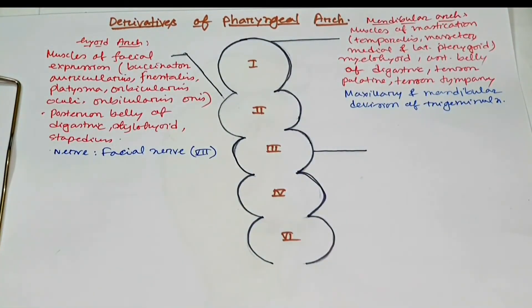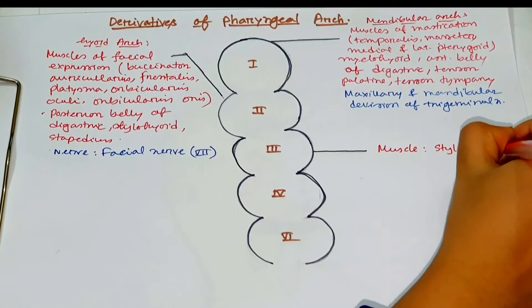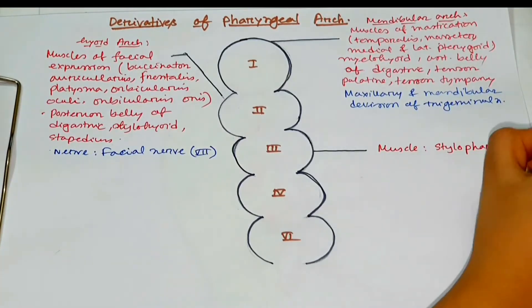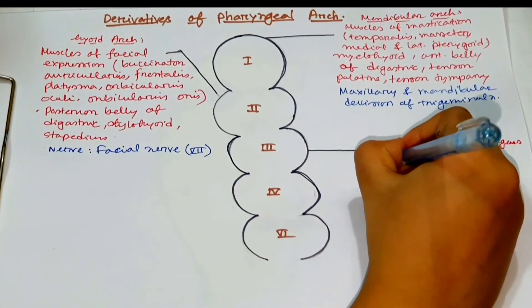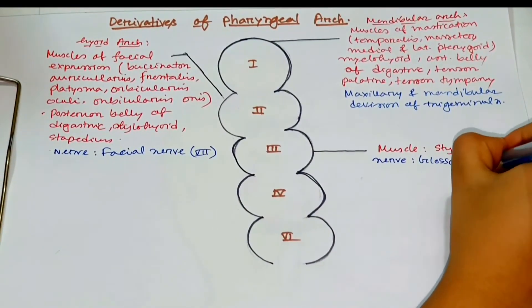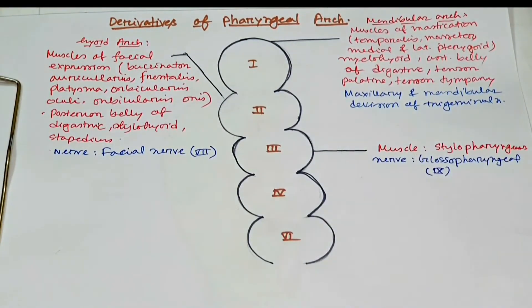Coming to the third arch, the muscle derived from the third arch is stylopharyngeus. The nerve derived from the third pharyngeal arch is the glossopharyngeal nerve — the ninth cranial nerve. So stylopharyngeus muscle and the glossopharyngeal nerve develop from the third pharyngeal arch.